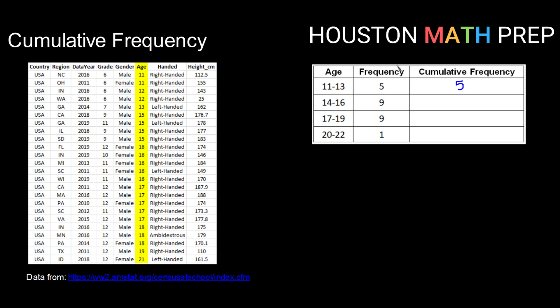So notice that from a frequency distribution to a cumulative frequency distribution, the number in the first class is always going to be the same. Where things start to change is when you get into the second class and beyond.